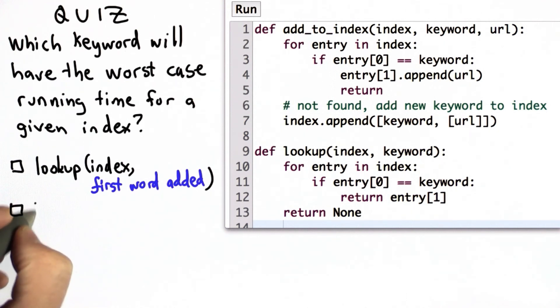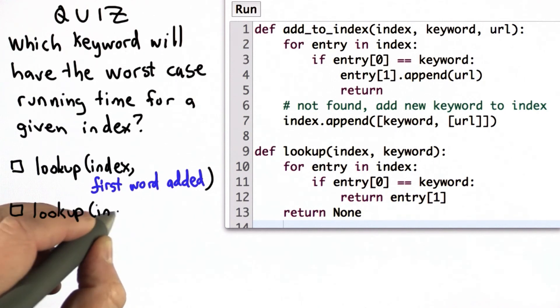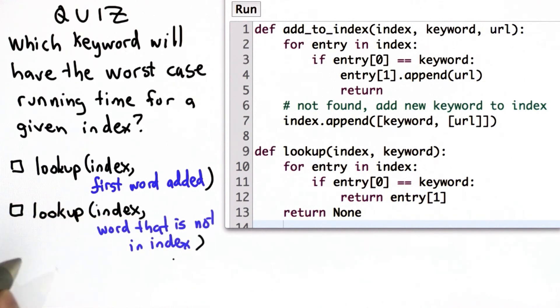The second choice is doing lookup, passing in the index, and a word that is not in the index. And the third choice is calling lookup, passing in the index, and as the second input passing in the last word that was added to the index. So for the quiz, you should check all the answers that have the worst case running time.